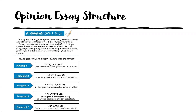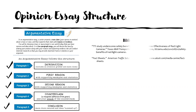When we write our second opinion essay, it's going to have the same structure as our first one. There's going to be an introduction paragraph, a first reason paragraph, a second reason paragraph, a counterclaim paragraph, and a conclusion paragraph, along with a properly done bibliography. Different opinion topic, but the same structure.